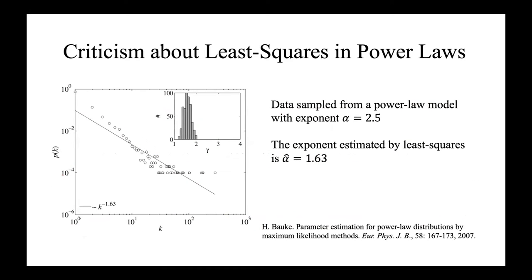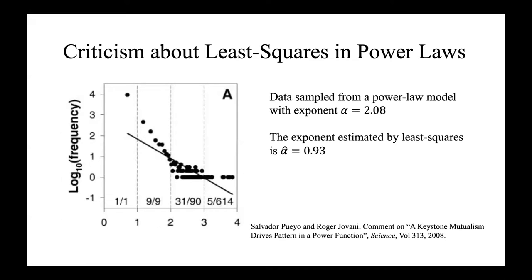Here, we present two example papers that conducted experiments to criticize least-squares. In this paper, the author sampled data from a power law model with exponent being 2.5 and they estimate the data by least-squares and get the estimated result 1.63, so they conclude that least-squares is biased. In this paper, the authors use the exponent being 2.08 and get the estimated exponent around 0.93, so they conclude that least-squares is biased.